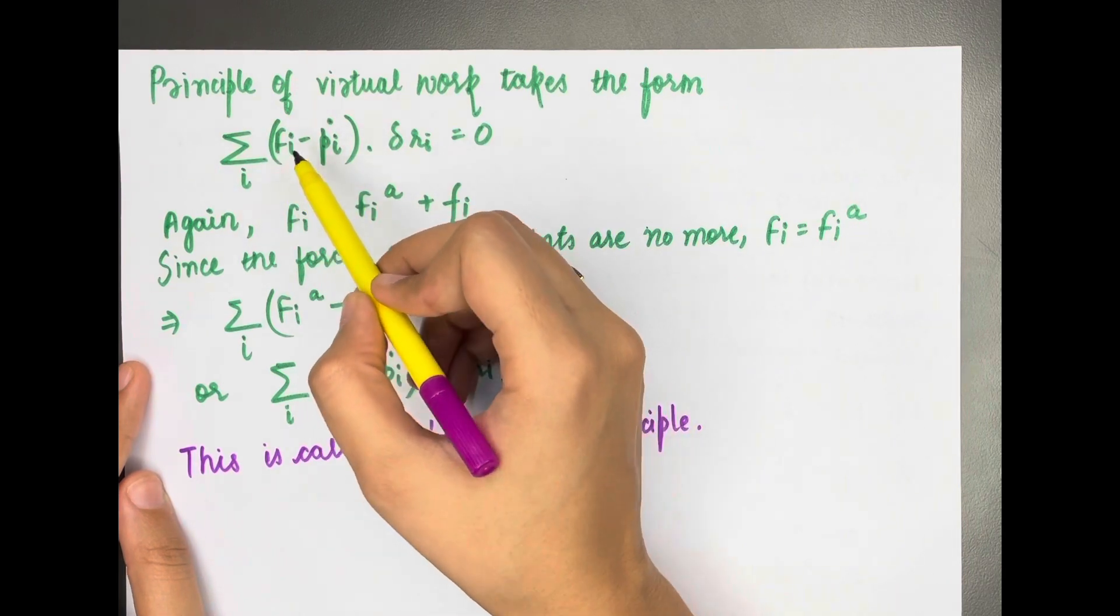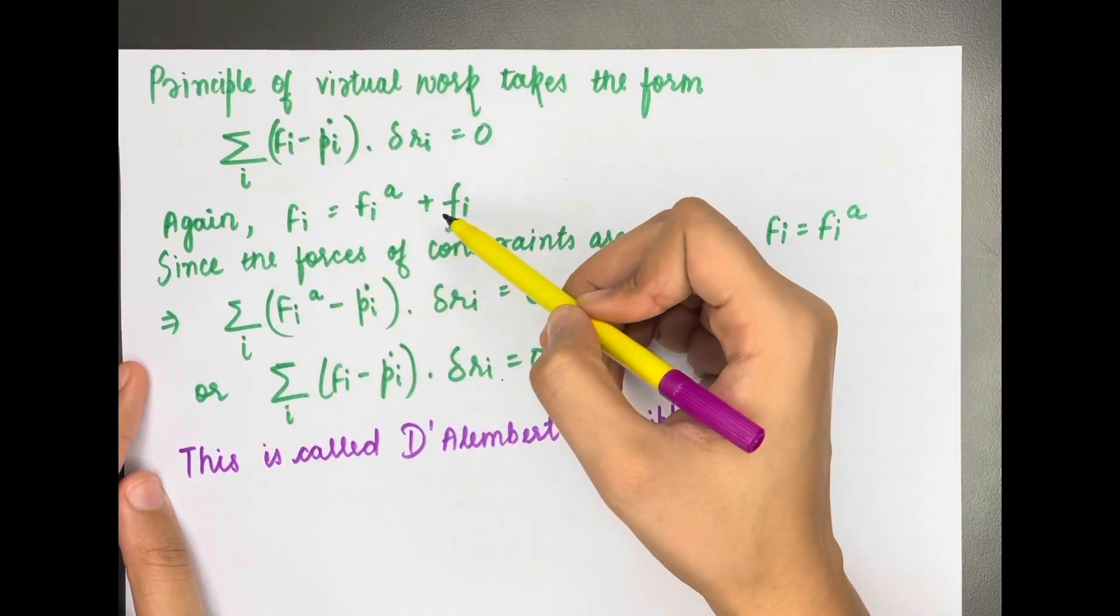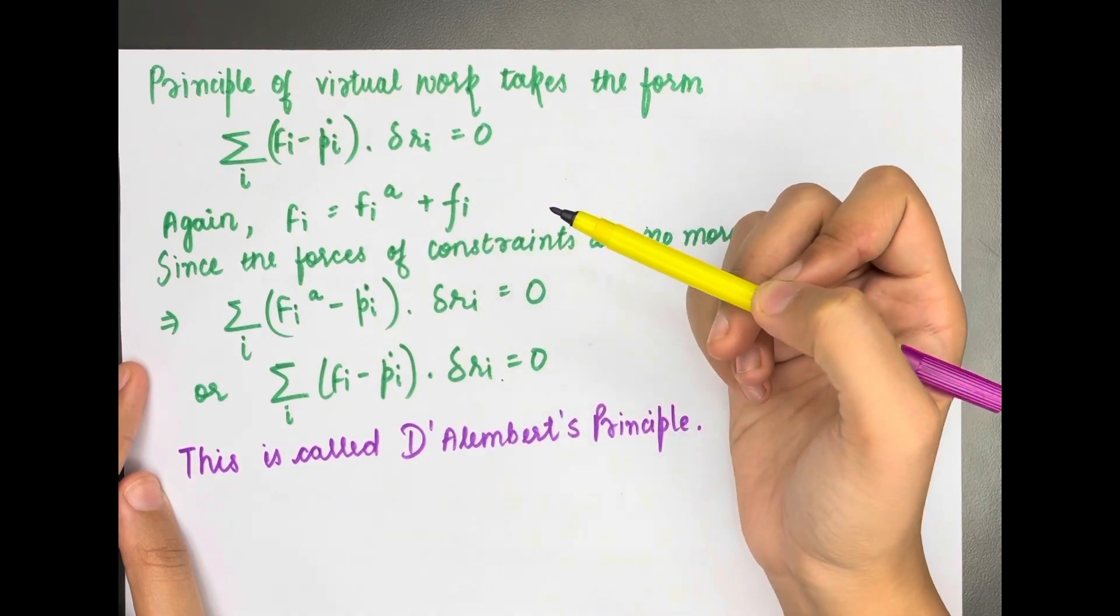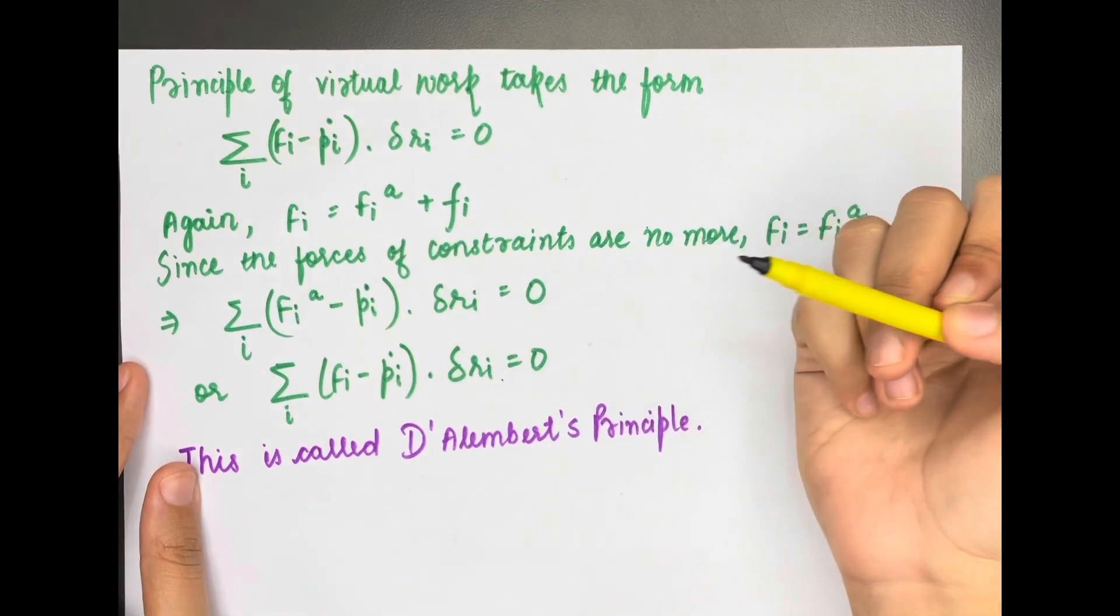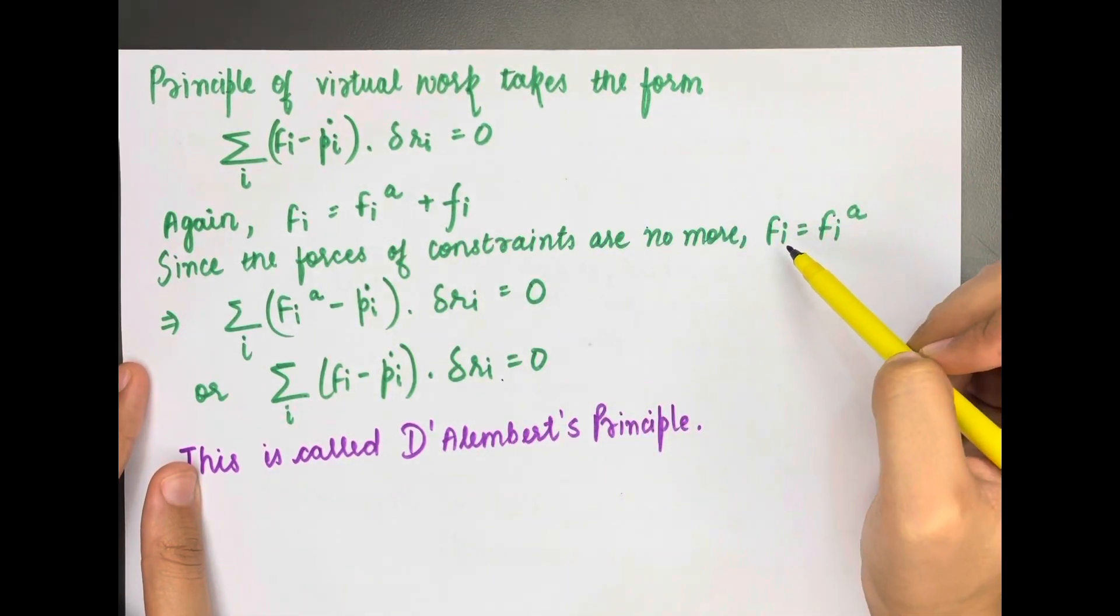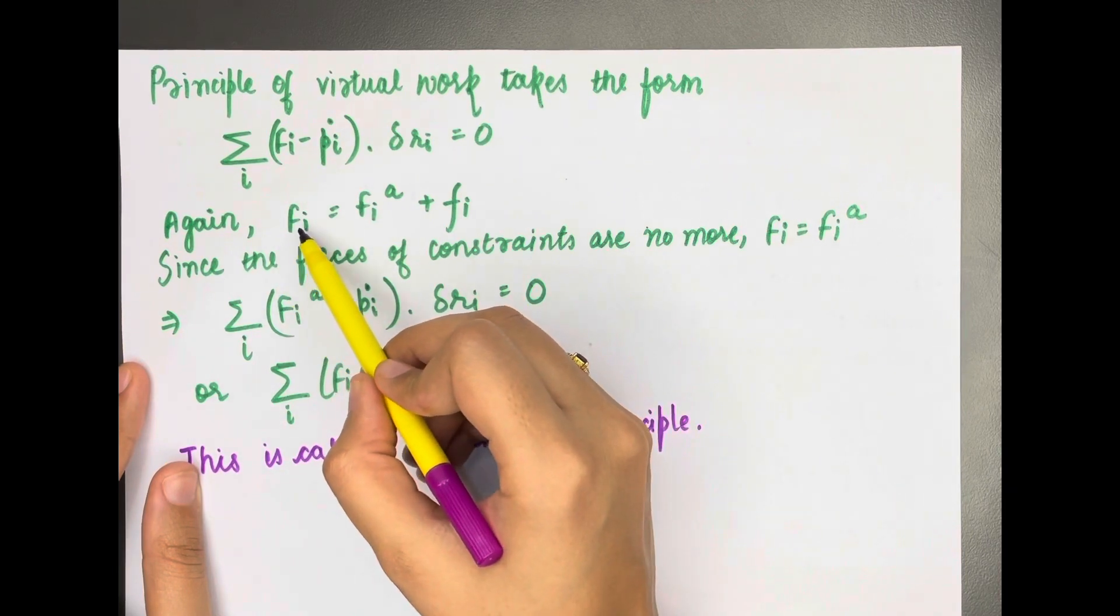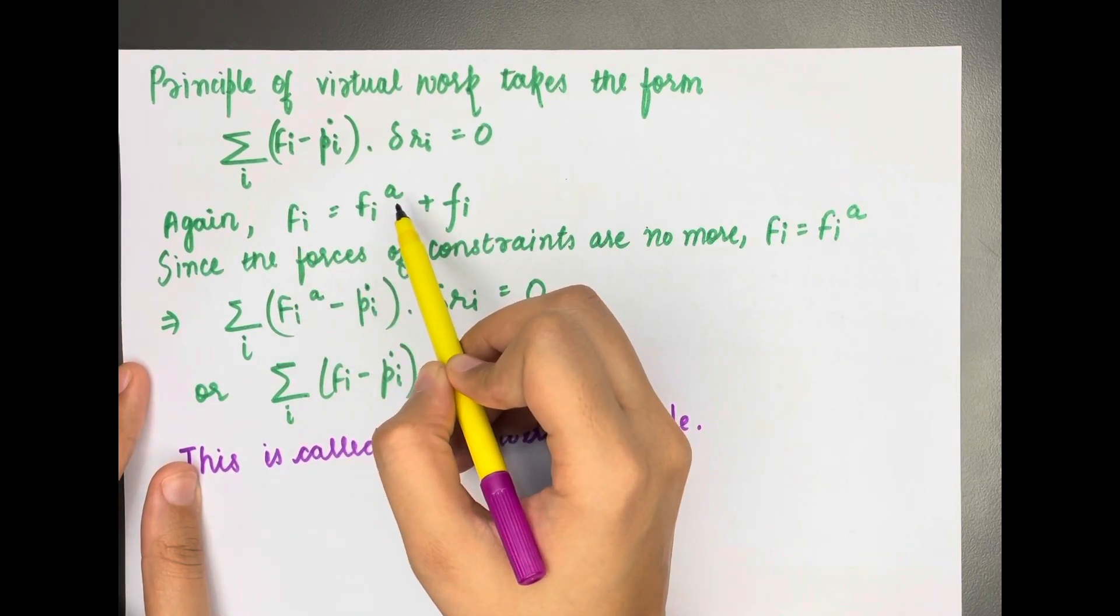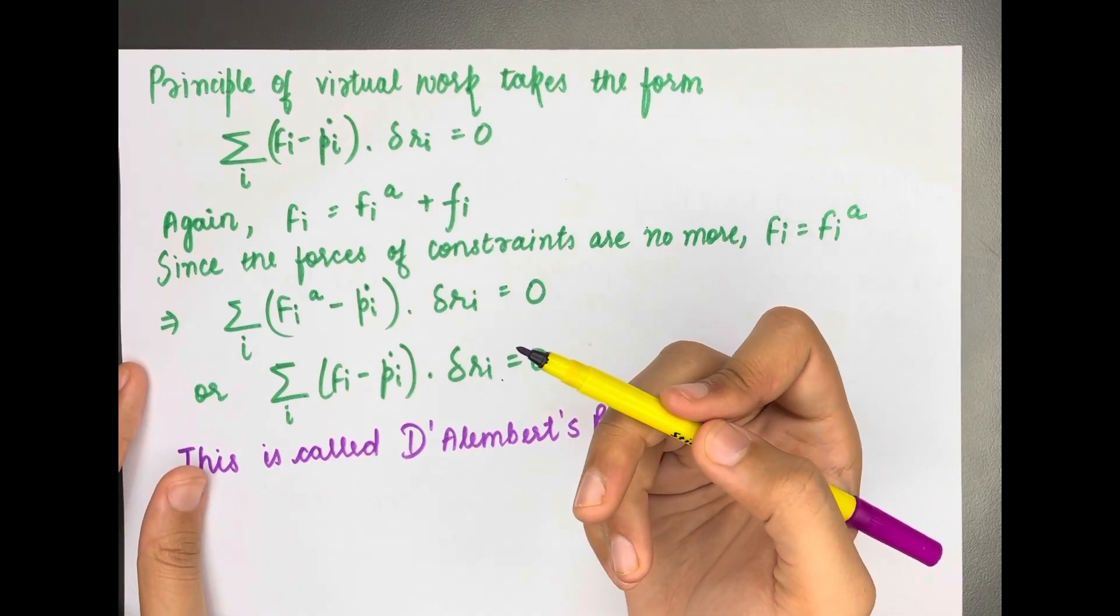Now we will write Fi as the sum of the applied force and the force of constraints. In D'Alembert's principle, forces of constraints are no more, meaning the constraint forces equal zero, so Fi equals Fi^a. This is the key benefit of D'Alembert's principle: we get rid of the forces of constraints.